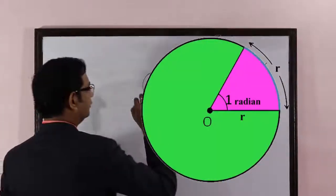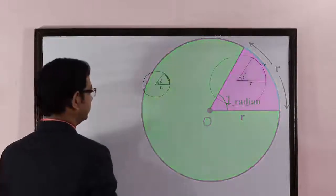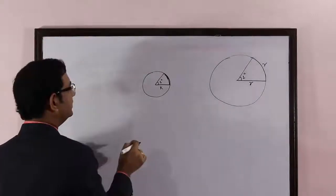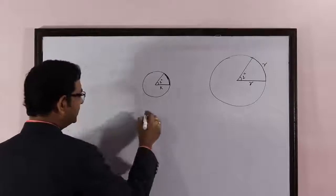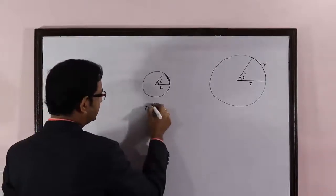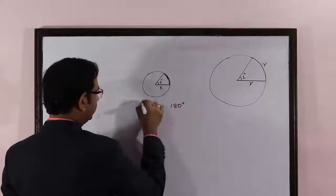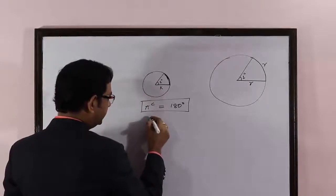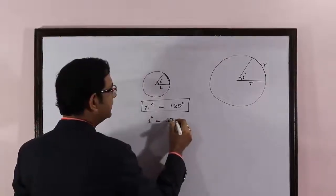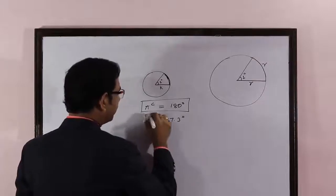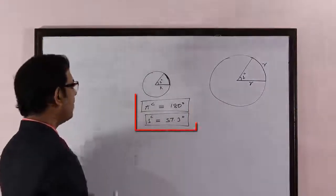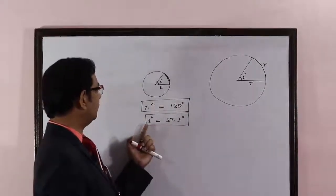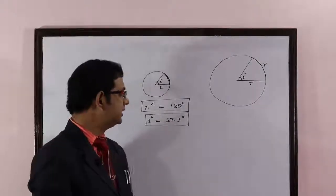Radian is the SI unit to measure an angle. There is a relation between radian and degree: pi radian is equal to 180 degrees. This is the relationship between radian and degree. One radian is equal to approximately 57.3 degrees.